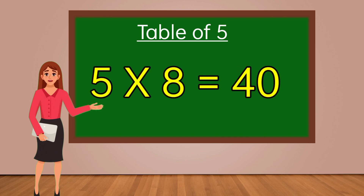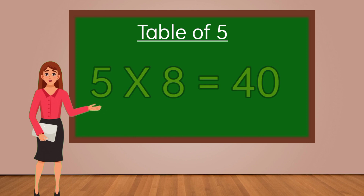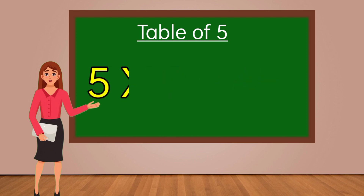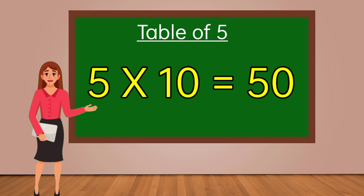5 sevens are 35. 5 eights are 40. 5 nines are 45. 5 tens are 50.